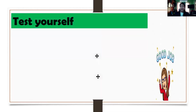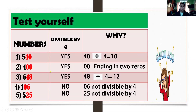Now let us see if your answer is correct. In number 1, we have 540. So what is the last two digits? The last two digits is 40. If we divide 40 by 4, it is 10. There is no remainder. Yes, your answer is correct.